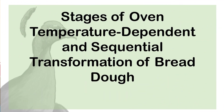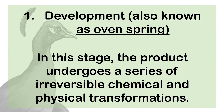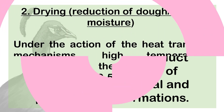Importance of oven temperature: Oven temperature causes physical transitions and chemical reactions to take place in the dough or batter. Stages of oven temperature — dependent and sequential transformation of bread dough. Number 1: Development, also known as oven spring. In this stage, the product undergoes a series of irreversible chemical and physical transformations.